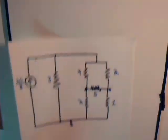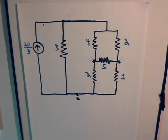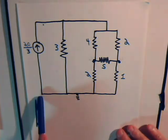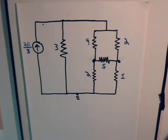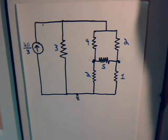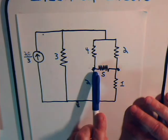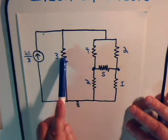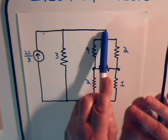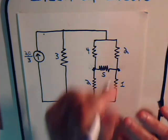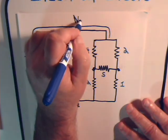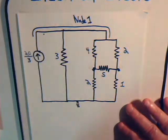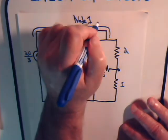Our first task is to identify all the nodes. At the bottom, all the lines are conductors that feed into a single point — so there's a single node at the bottom, and that node is grounded. Looking at the upper-left junction, we have branches feeding into that point from multiple directions, so this entire part of the circuit can be considered node 1, at potential V1.